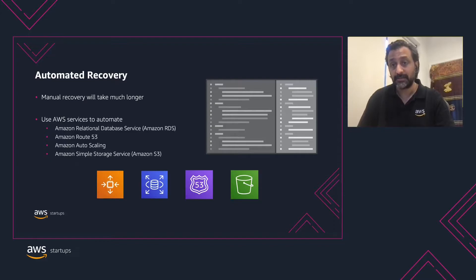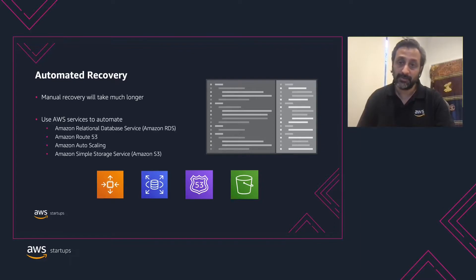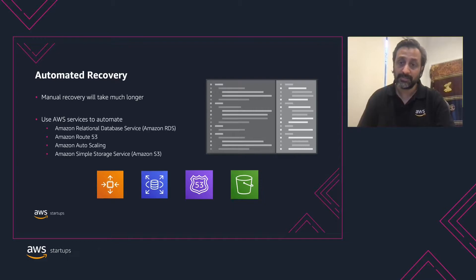AWS has features that can help you achieve this. For example, we have services that help you automate recovery, like our managed SQL database, RDS, that can failover to a different AZ on failure, or our global DNS service, Route 53, which can route traffic to different regions as a particular region becomes unavailable. Our compute services let you handle recovery by using auto-scaling, and our distributed object storage service, S3, is built to be highly resilient to failure.